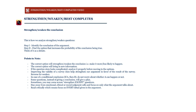This is how we analyze strengthen and weaken questions: we identify the conclusion of the argument first, then find the option that increases the probability of the conclusion being true for strengthen questions, and false for weaken questions. Think of it as a debate — it will help you get perspective.